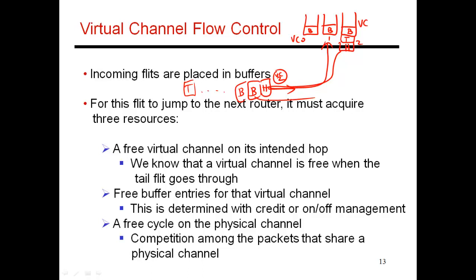The next resource that you need to acquire is make sure that there is a free buffer entry in your virtual channel at the next router. So if the body flit has been assigned to virtual channel 2, it has to make sure that there is something free over here before it can make the hop across. So that's the next thing you need to acquire. The third thing you need to acquire is the link itself. Because I said that there are multiple different packets in transit at the same time. In this case, there are three different packets that are all sharing the same physical link. So again, there has to be an arbiter that grants the physical channel to one of these three packets every single cycle. So a flit goes across, assuming it has an assigned virtual channel, assuming there is a free buffer entry in that virtual channel at the receiving router, and assuming that there is a free cycle on the physical channel. So once it acquires these three resources, the flit then goes across.